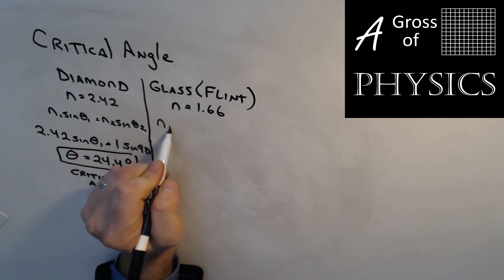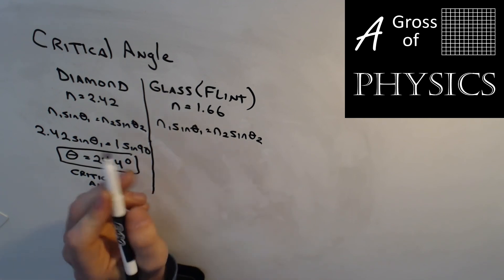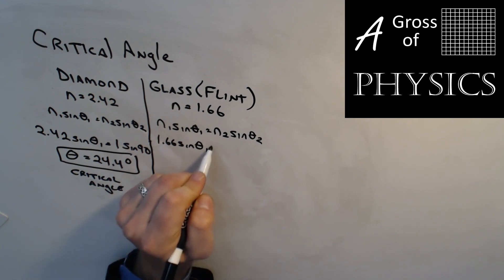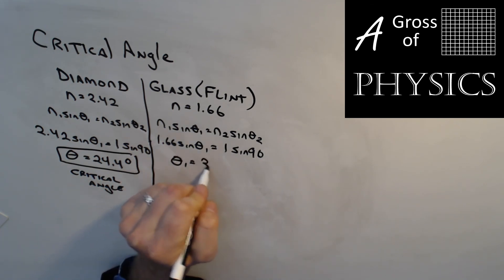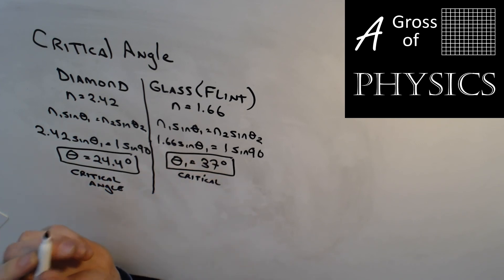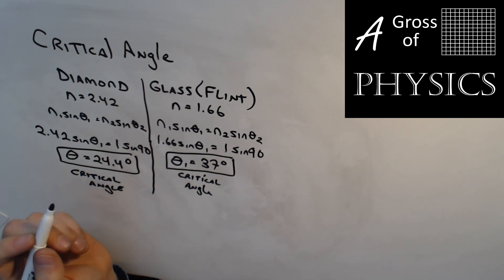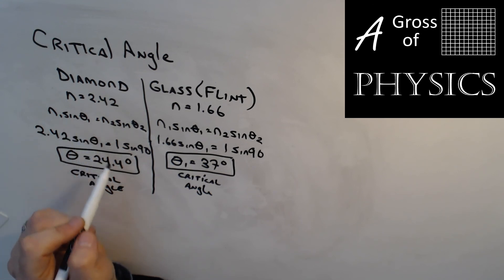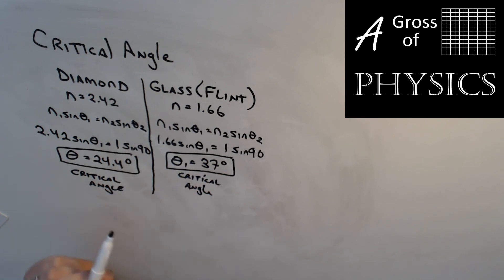For flint glass: N1 sinθ1 = N2 sinθ2 gives 1.66 sinθ1 = 1 × sin90 = 1. So sinθ1 = 1/1.66, giving θ1 = 37 degrees. Even if we cut flint glass the same as a diamond, more light would be trapped inside the diamond — so flint glass wouldn't sparkle as much and wouldn't be a good substitute.